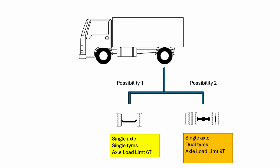This diagram shows a couple of possibilities for the rear axle on this truck. Possibility number one is a single axle with single tires, with an axle load limit of 6 tonne. Possibility number two on the right shows a single axle with dual tires, with an axle load limit of 9 tonne.